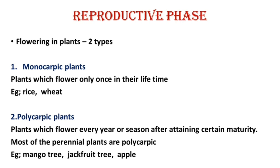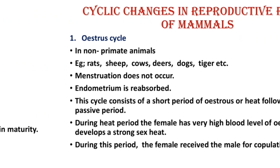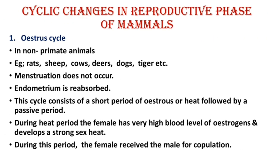Now let us discuss about the estrus cycle. Non-primate animals have the estrus cycle. For example, rats, sheep, cow, deer, dog, and tiger.